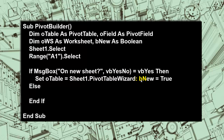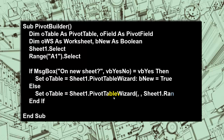We make sure that B New is set to true, otherwise it remains false. In the else branch, we set O table to the pivot table wizard of Sheet 1 like before, but this time we specify inside the parentheses, in the third argument, that we want to store the pivot table on Sheet 1 in range I1.